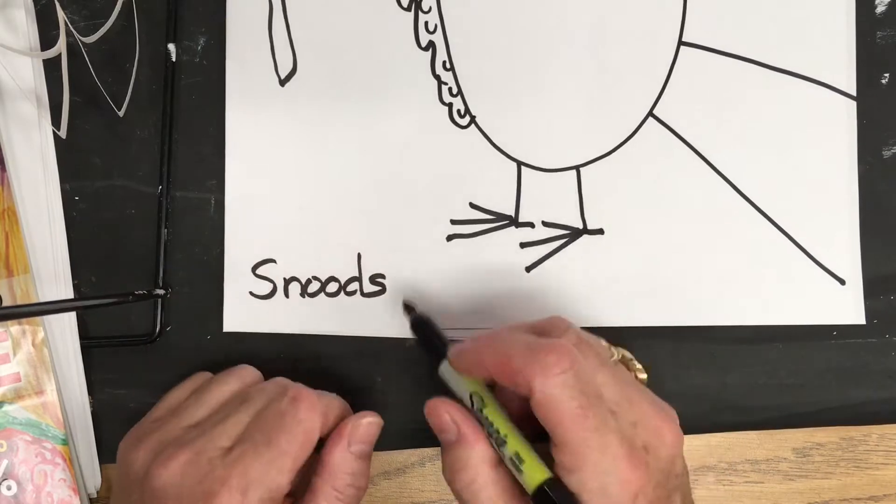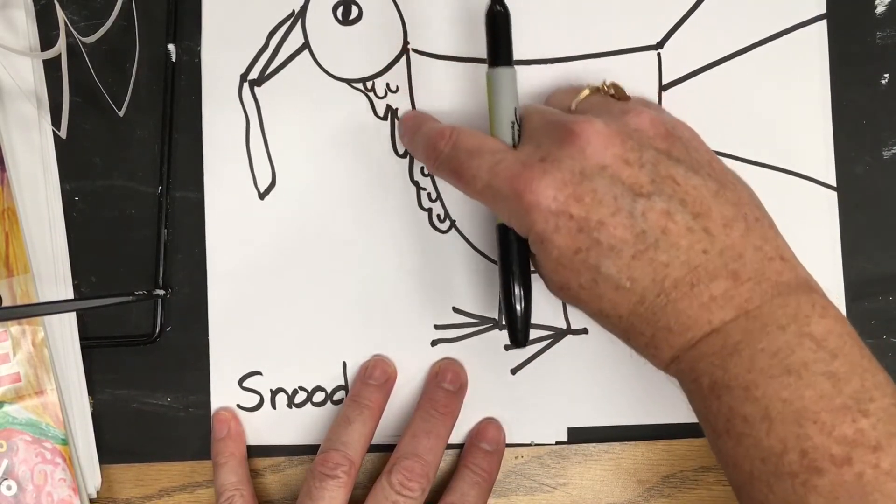A waddle. A waddle, right. So the waddle comes under his chin.